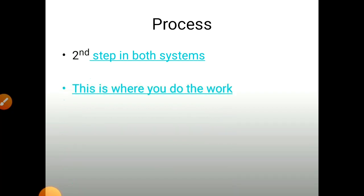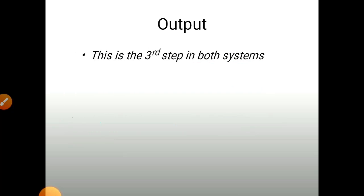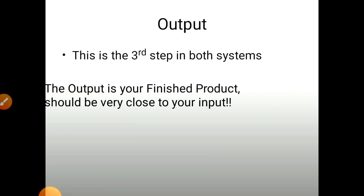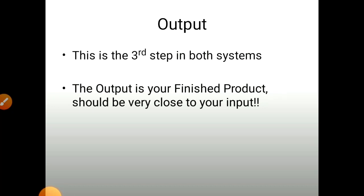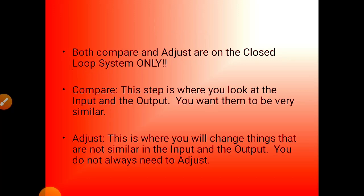Process is the second step in both systems — this is where you do the work. The seven resources of technology fit under process. Output is the third step in both systems. The output is your finished product and should be very close to your input. Monitor is only on the closed loop system — it looks over something, this is the feedback part where feedback sensors are used. Both compare and adjust are on the closed loop system only.